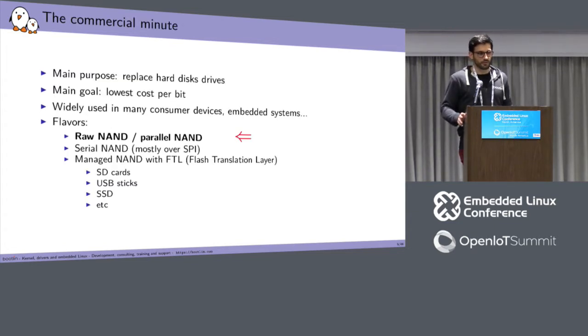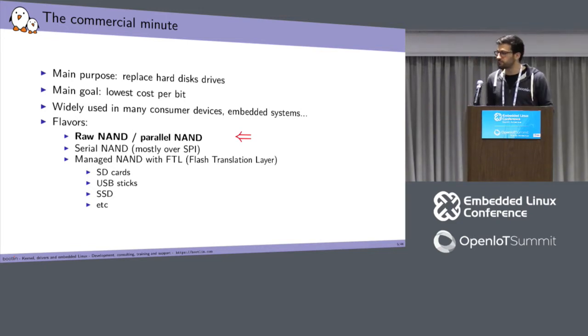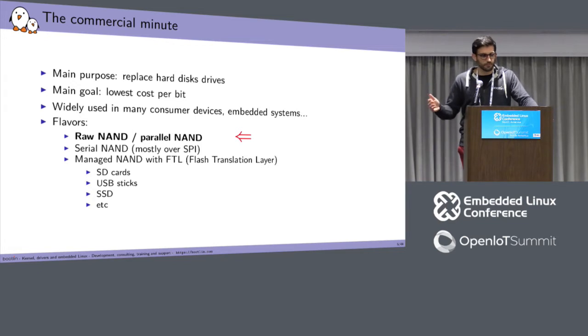Before the technical aspects, just some commercial information. NANDs were once designed to replace hard disk drives, and you can find them widely spread in consumer electronics like USB sticks, SSDs, SD cards and so on. They come under different flavors. The ones I just talked about are managed NANDs. You don't see it's a flash, it's a NAND inside, you just see it as a way of storing data. I will speak about raw NANDs only, also called parallel NANDs.